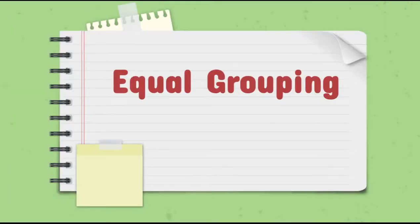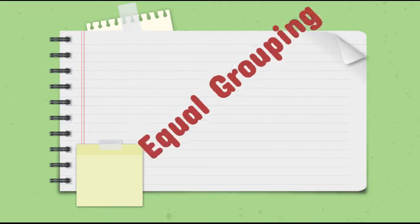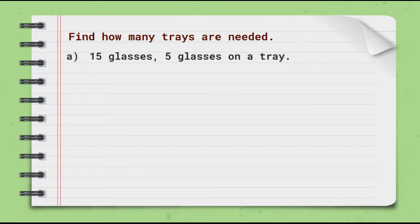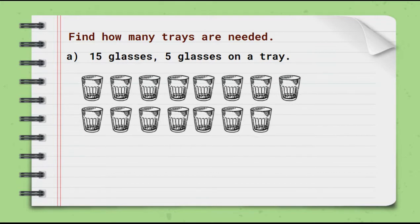Let's see some more examples on equal grouping. Find out how many trays are needed. 15 glasses, 5 glasses on a tray. If we take 15 glasses and make groups of 5 each.